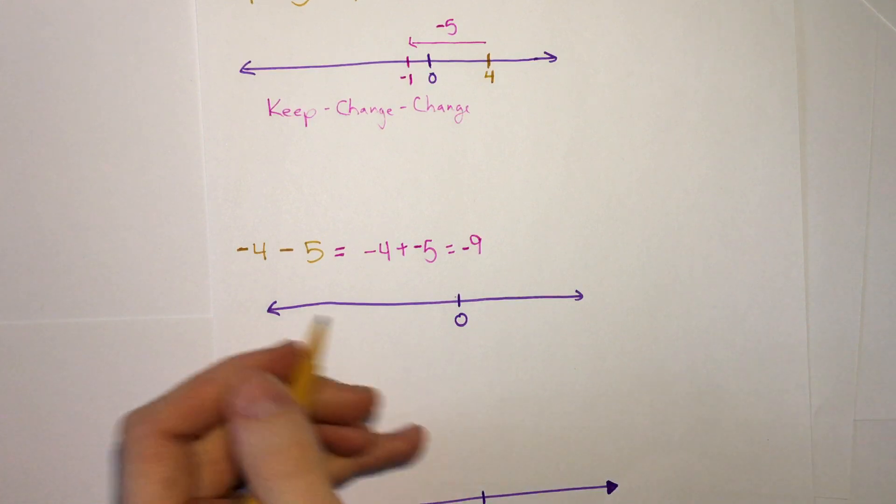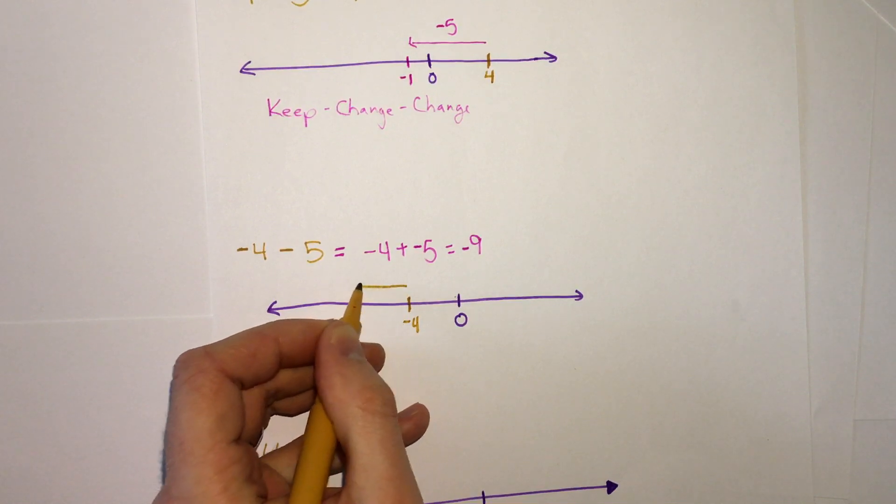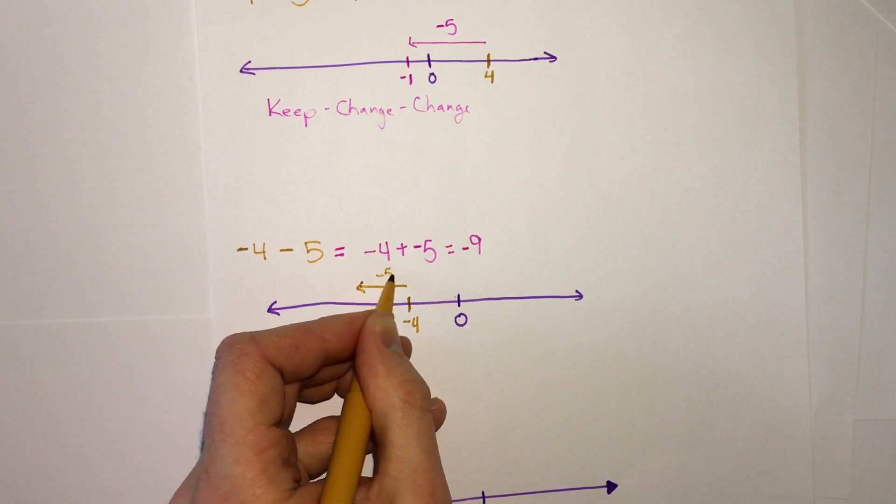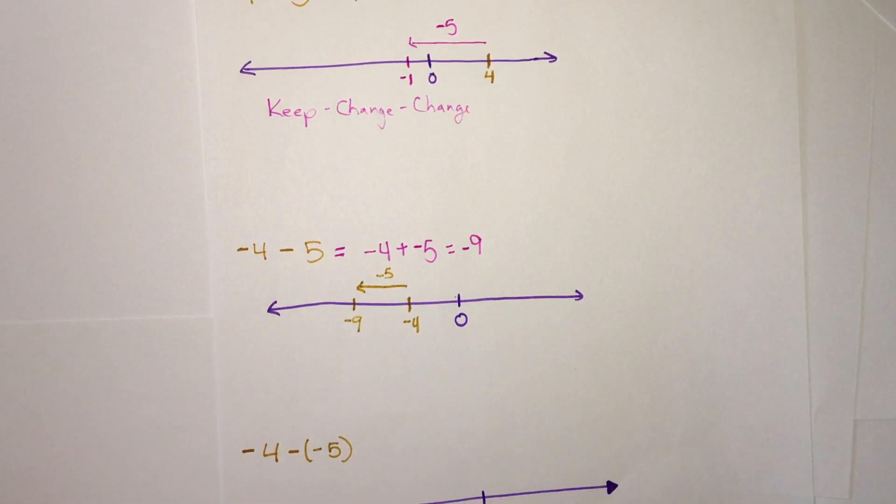We can verify this on our number line. If we start at negative 4, subtracting 5 would bring us 5 deeper into the negatives. 5 more would bring us to negative 9.